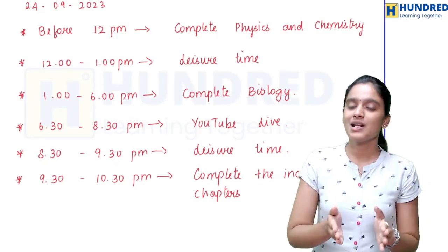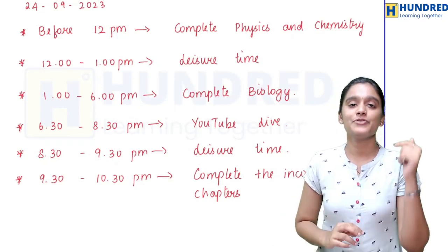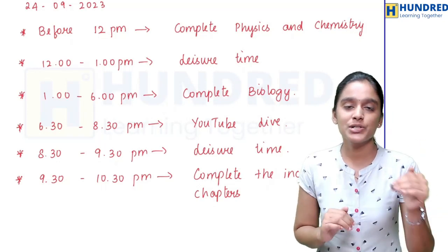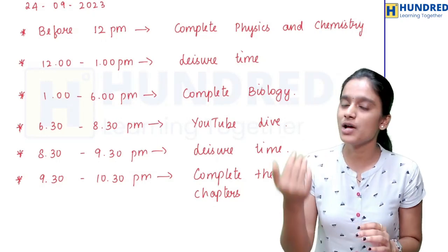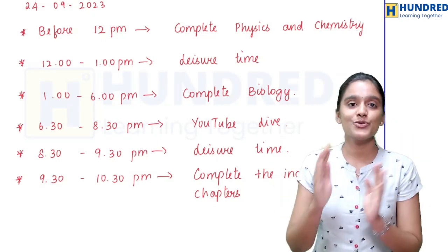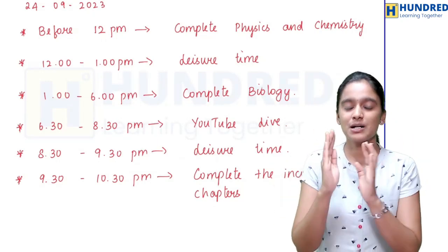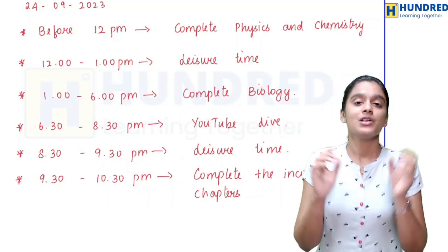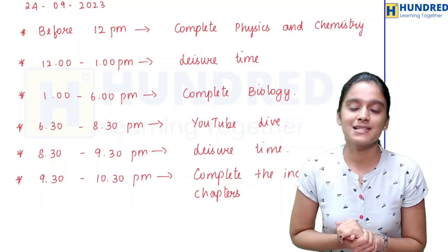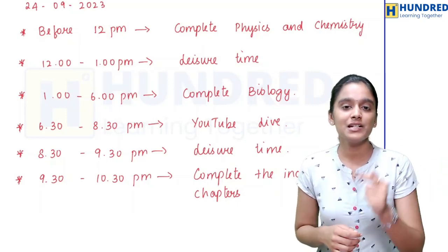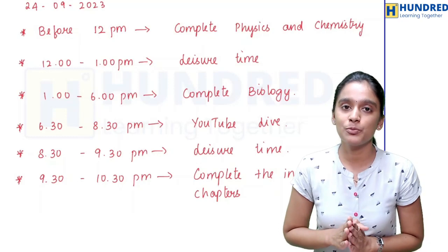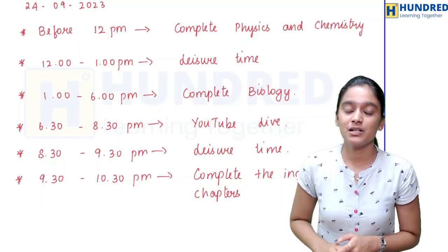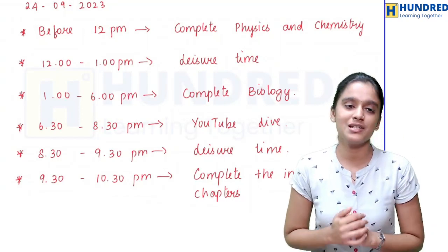Before 12 o'clock, complete physics and chemistry important questions. From 12 to 1, rest and have your lunch. Next, from 1 to 6 — 5 hours — you can study biology and complete the full portions. That covers the chapter-based important questions. From 6:30 to 8:30, we have a live mentee session covering chemistry and biology.